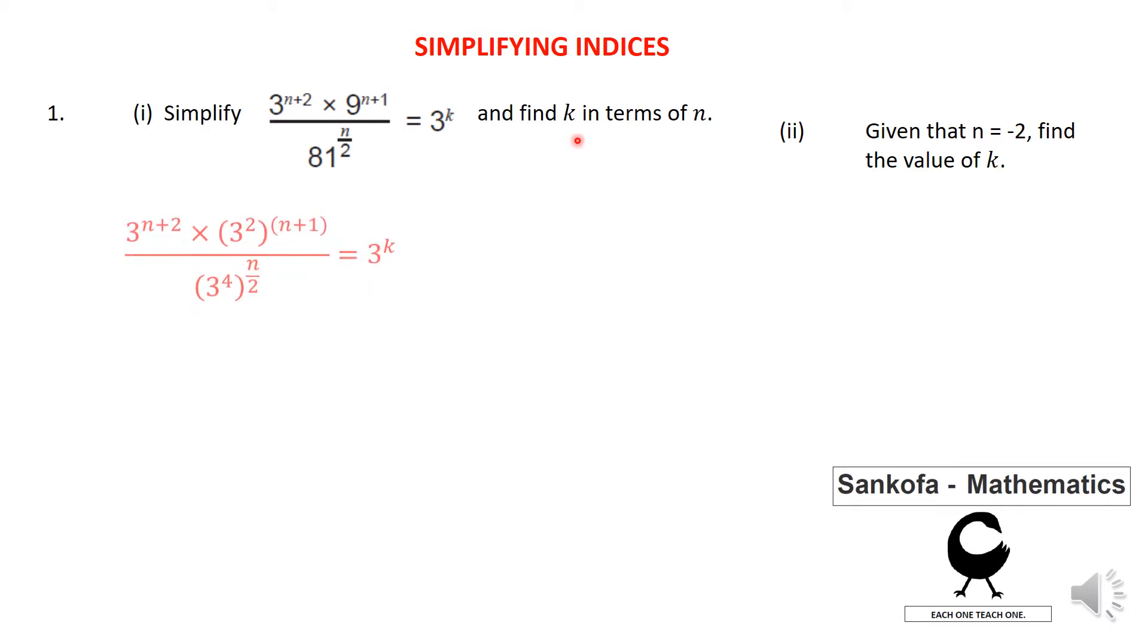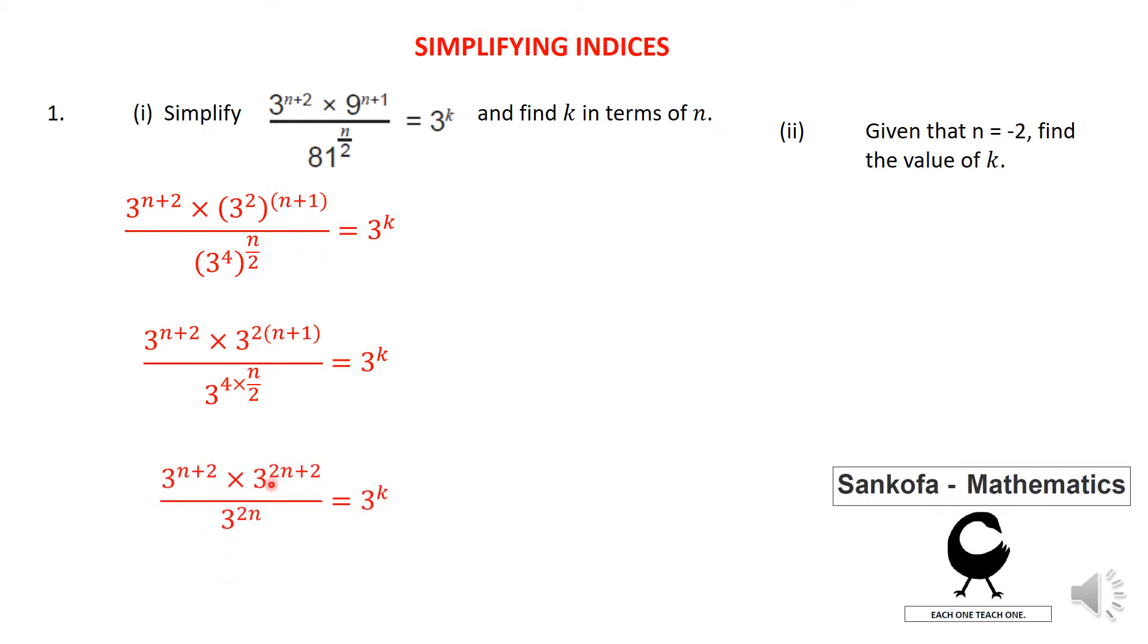So the first thing is you should always try to see where the bases are not prime numbers like 9 or 81. It's best if you can express them in the index form, prime factors. So 81 becomes 3 to the power of 4, and 9 becomes 3 squared. And then you distribute that 2 over and also that 4 by multiplying the indices. So that should clearly add up to 3 raised to this n plus 2 stuff here, times 3 raised to 2n plus 2, all over 3 raised to the power of 2n.